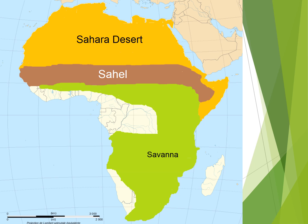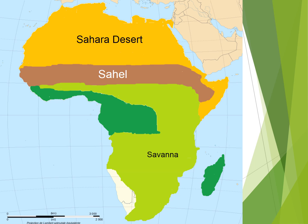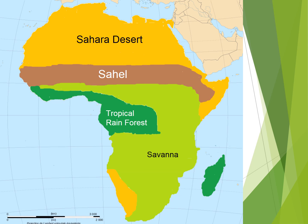Next, we have the Savannah. It is the largest biome and is the most populous. Next, we have the tropical rainforest — this includes part of mainland Africa and all of Madagascar. Again, in the south, we have the Kalahari Desert.